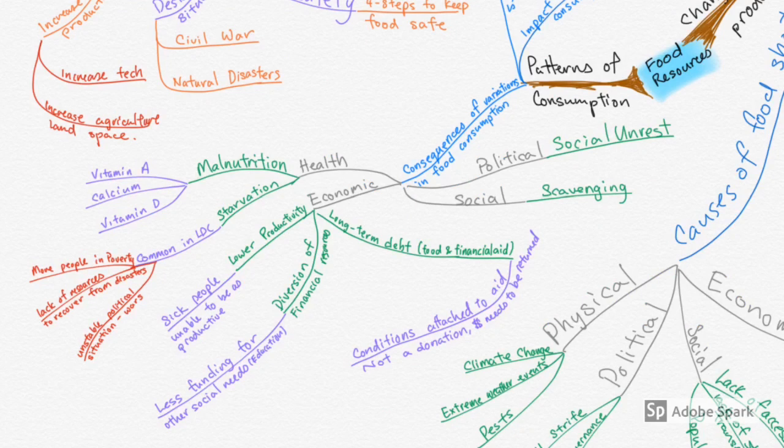So we'll start by looking at the patterns of consumption. First area that we look at is consequences of having variations in food consumption. In this sector, there are four general areas that we're looking at: health, economic, social, as well as political factors.